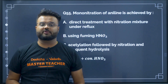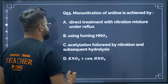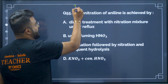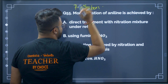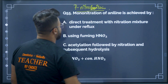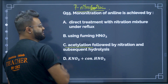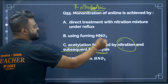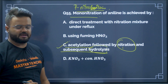Question number 55: mononitration of aniline to give para-nitroaniline. It can be obtained by first acetylation of aniline, followed by nitration, and then hydrolysis to form the mononitration product. Therefore option C will be your correct answer.